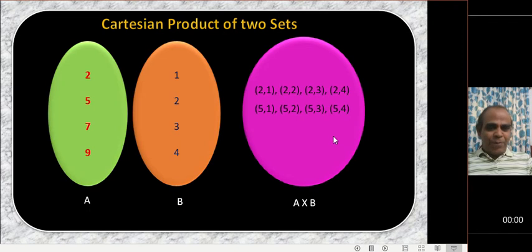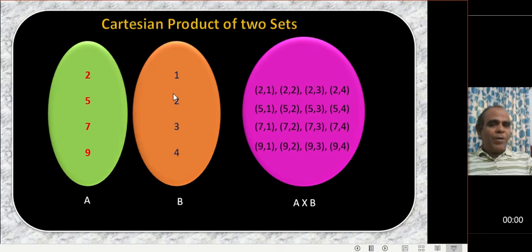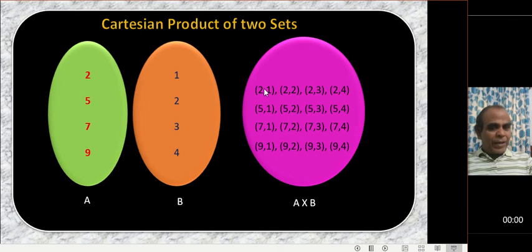Continuing: (5,3), (5,4), then (7,1), (7,2), (7,3), (7,4), and lastly (9,1), (9,2), (9,3), (9,4). Each element of A is paired with all the elements of set B. When you write two numbers together like this, they are called ordered pairs.